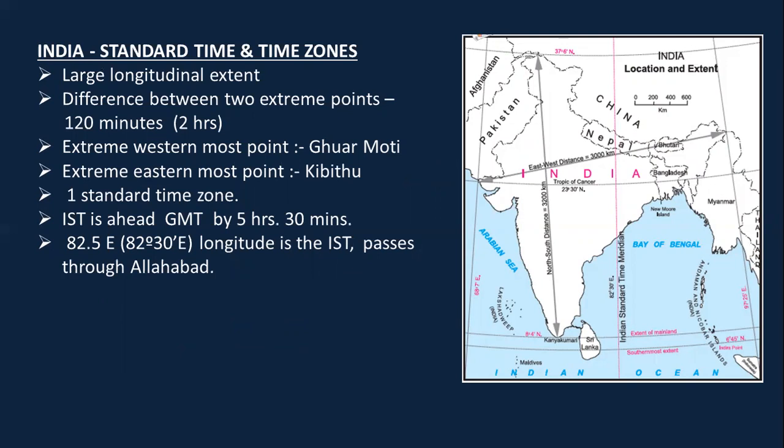India has a large longitudinal extent — the difference between its two extreme points is two hours (120 minutes). The extreme westernmost point of India is Guarmoto and the easternmost is Kibitu village. India has only one standard time zone — IST (Indian Standard Time), which is 5 hours 30 minutes ahead of Greenwich Mean Time. The longitude of IST is 82°30' East, which passes through Allahabad in Uttar Pradesh.